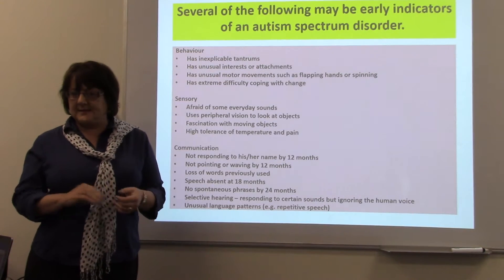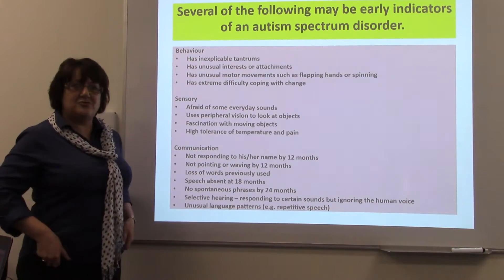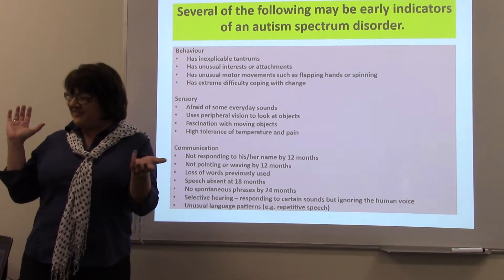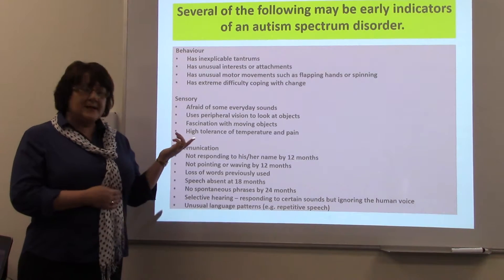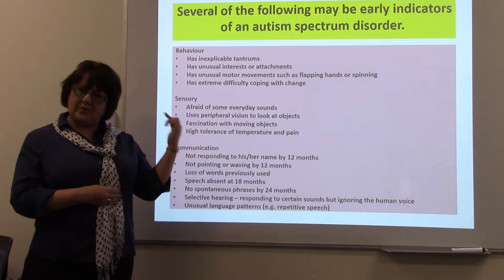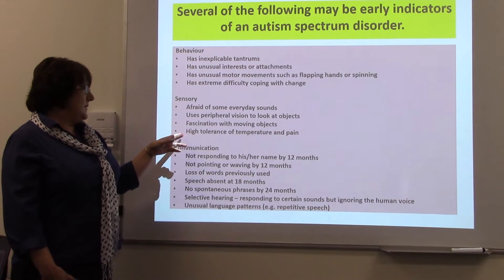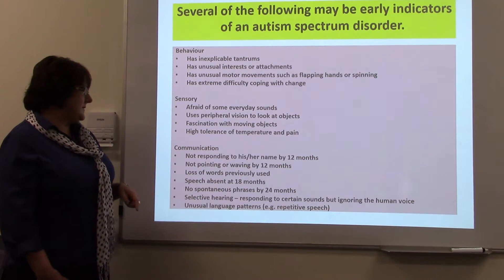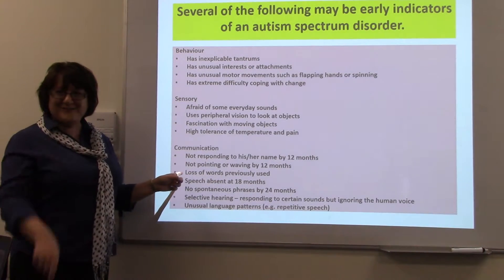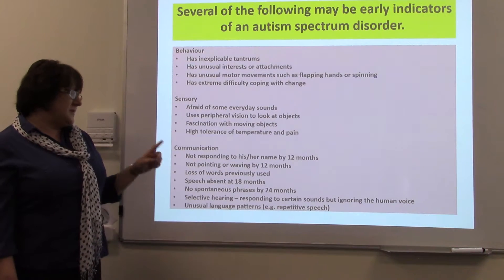Don't surprise a person with ASD or touch them on the shoulder unexpectedly — they get angry and respond in a very angry way, even though the other person might say it's just joking. They can't see it that way. They also tend to use peripheral vision to look at objects, viewing things from the corner of their eye. Fascination with moving objects, a high tolerance of temperature and pain, and not responding to their name are also indicators.